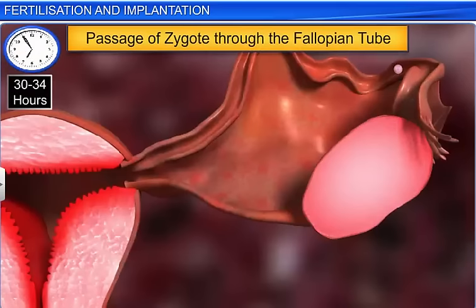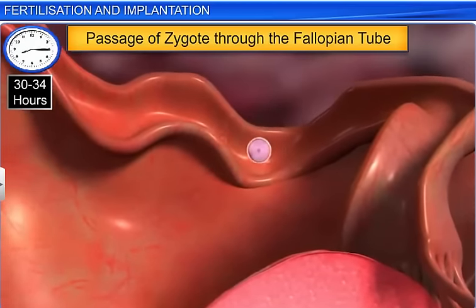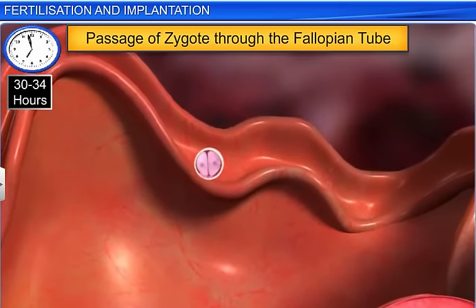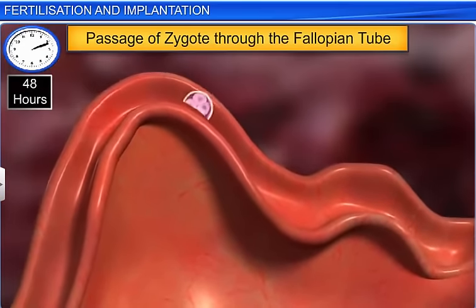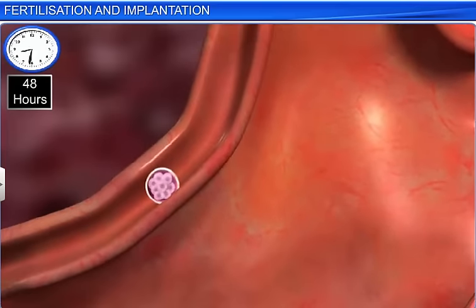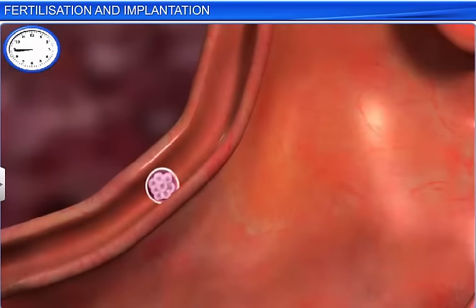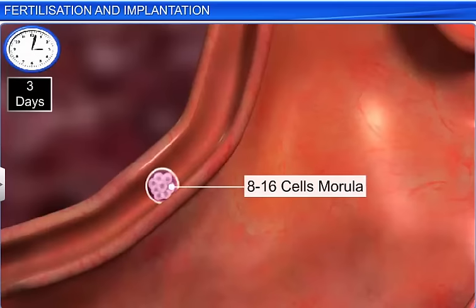A little more than a day after its formation, the zygote starts moving down the fallopian tube. Simultaneously, the zygote also undergoes mitotic division, and with each successive division, the number of daughter cells doubles. This division is termed as cleavage, while the resultant daughter cells are called blastomeres. About 3 days after fertilization, the zygote contains nearly 8 to 16 cells and is called a morula.